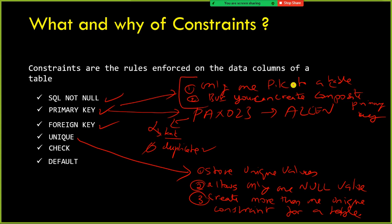You can create a composite primary key by combining more than one column. In the case of unique constraint, you can also create a composite unique constraint using more than one column, and you can have more than one unique constraint for a table, but it allows only one null value. That is the difference between these two — hope you understood.